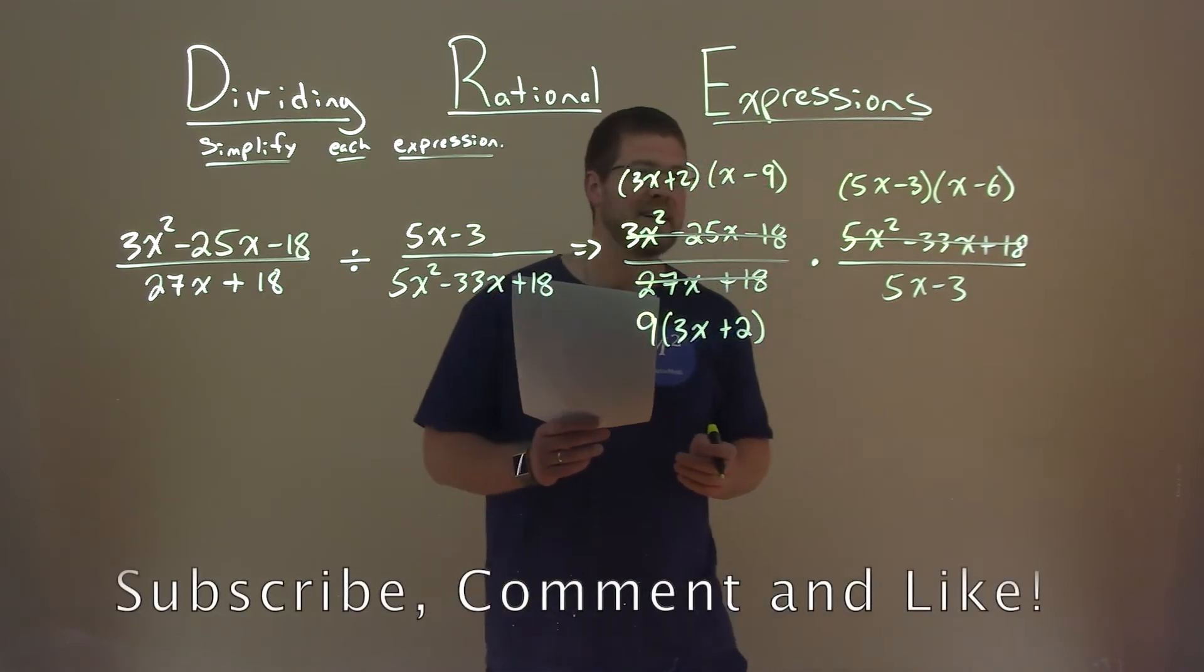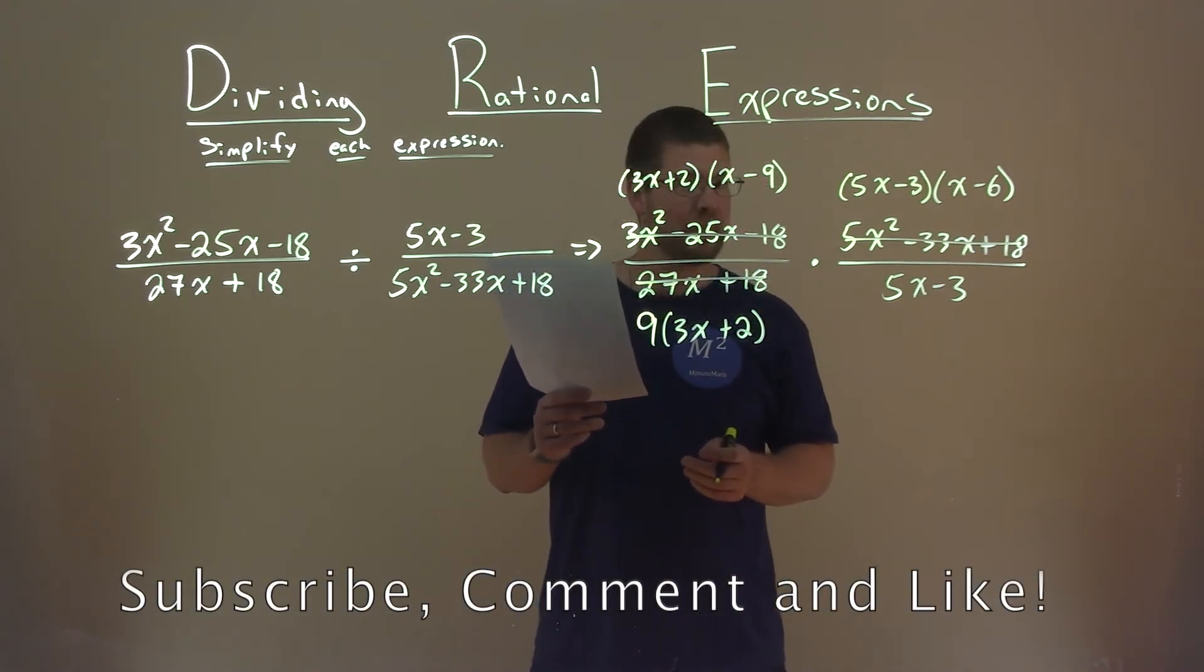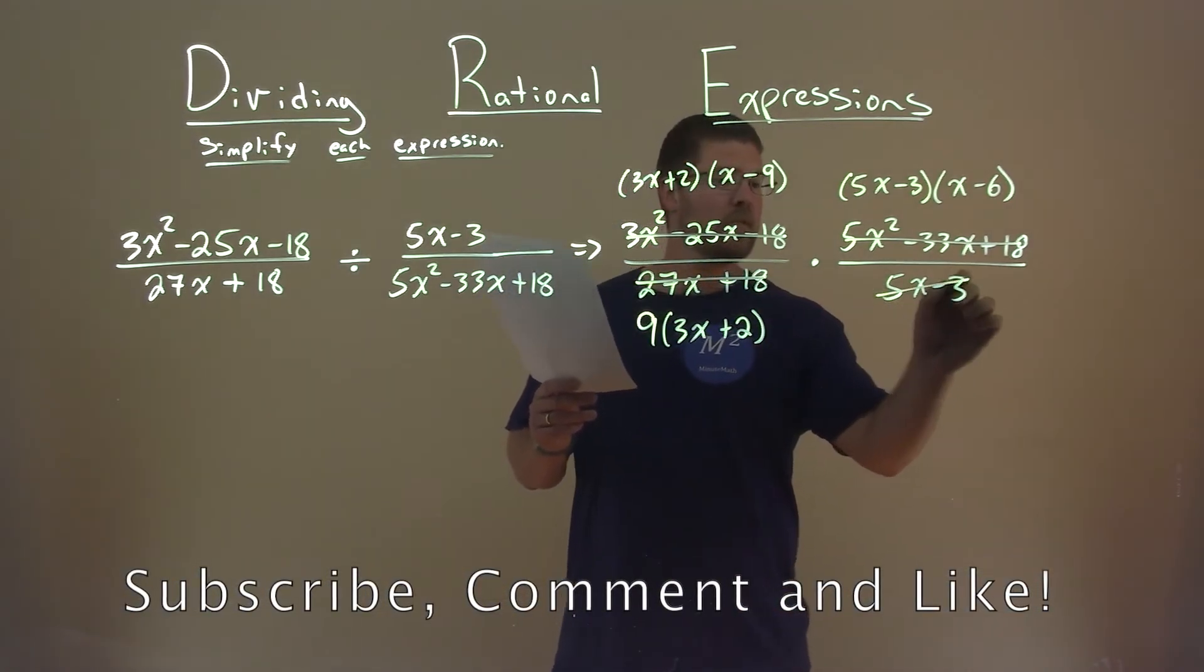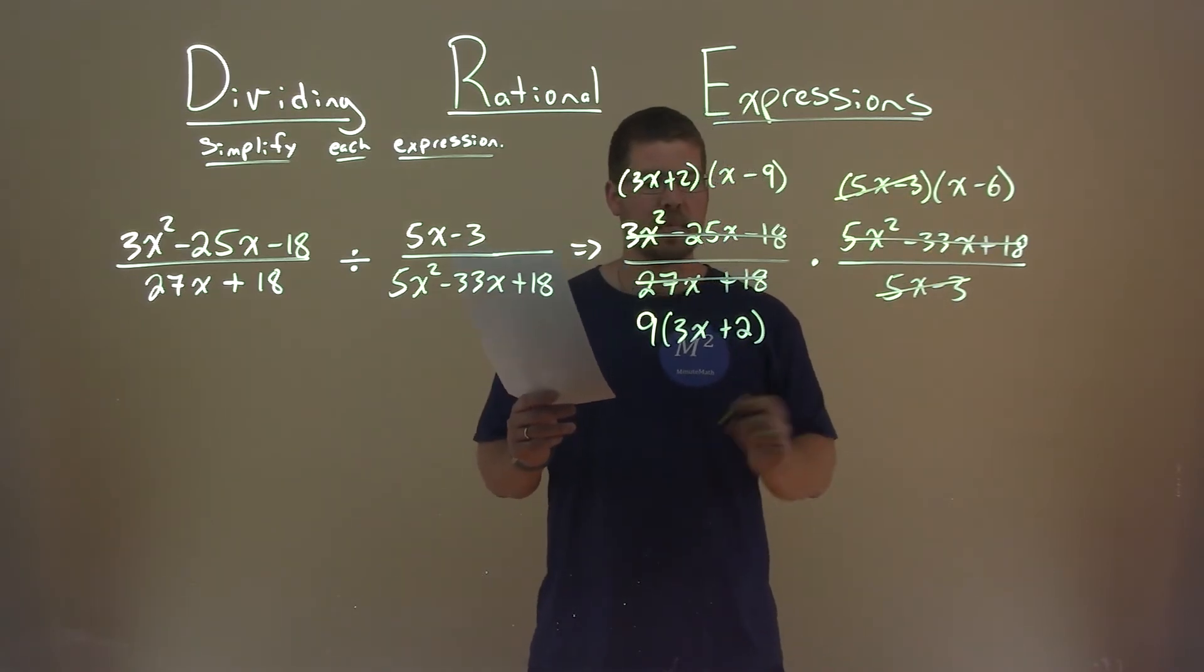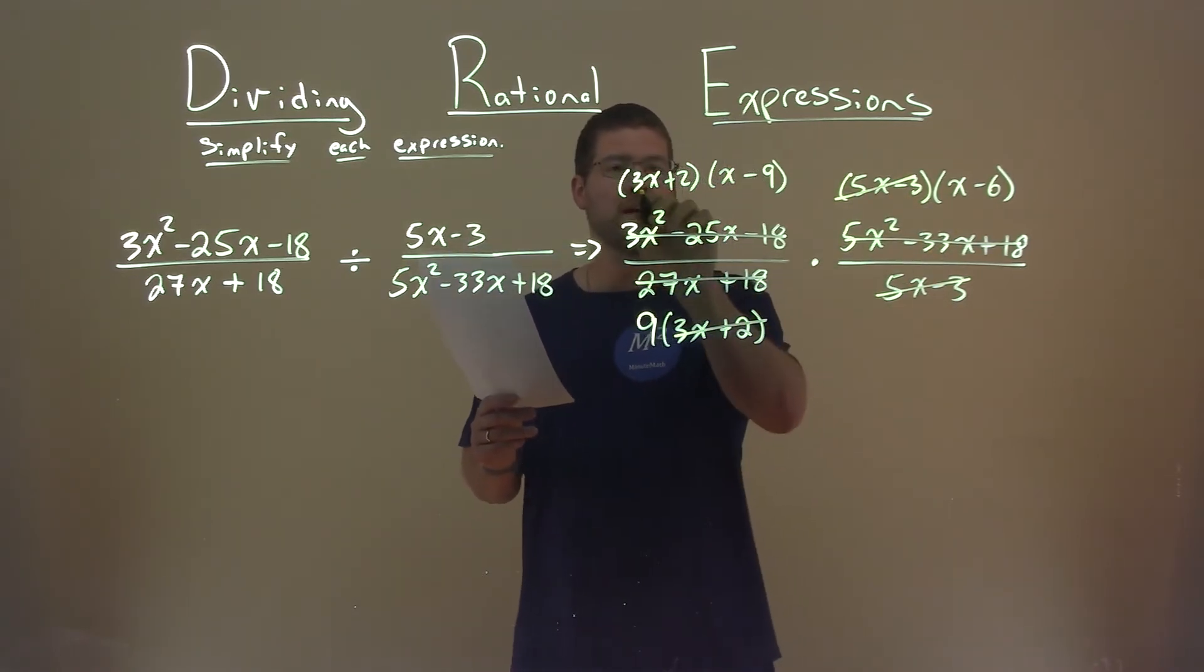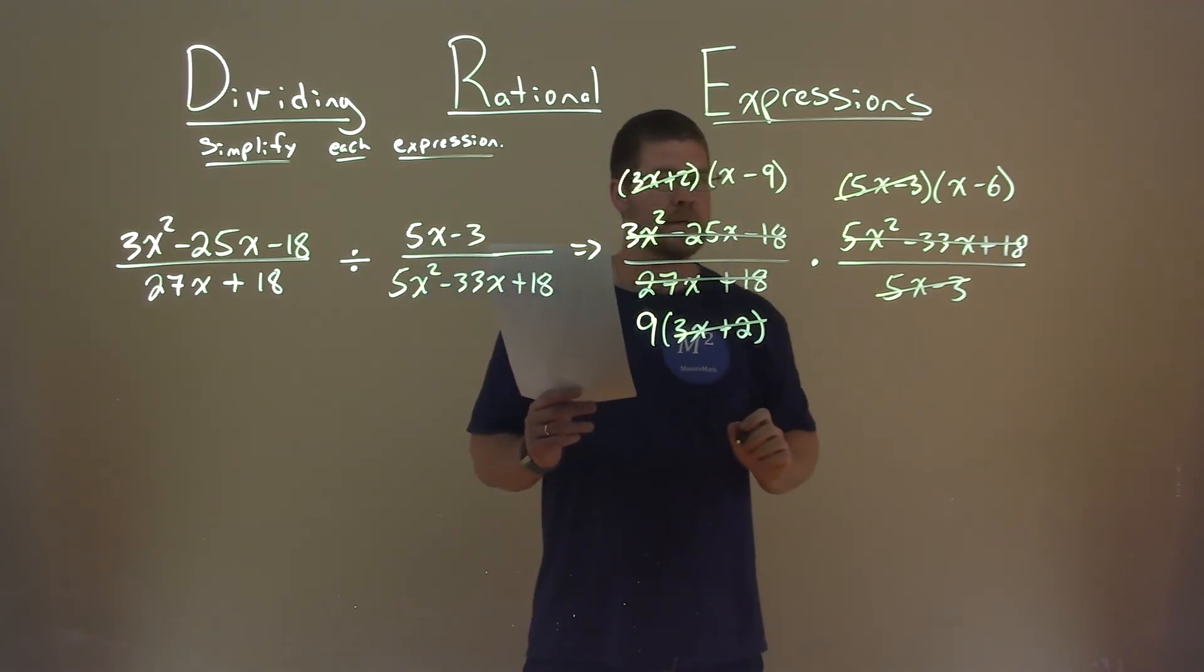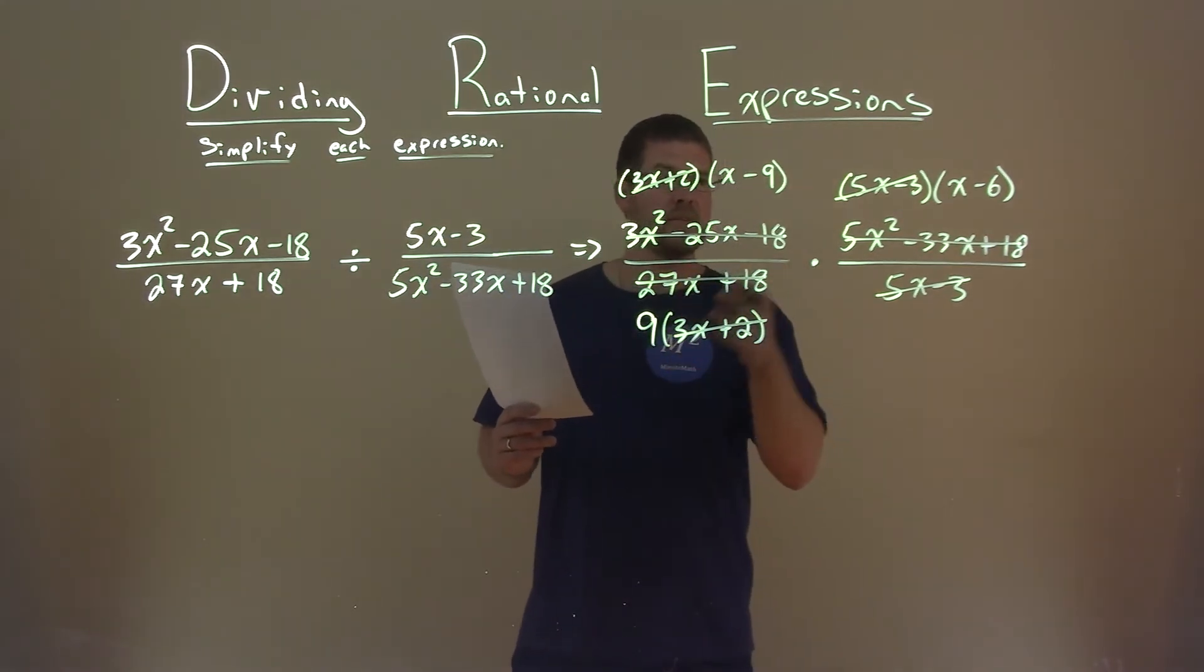So now what we're going to do is cancel out what we can. I see 5x minus 3 in the denominator and in the numerator. I see 3x plus 2 in the denominator as well as the numerator. And nothing else really looks like it can simplify and cancel out.